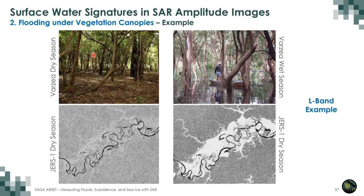Comparing two Amazon rainforest cases: during the dry season, you see moderate gray vegetation scattering around a dark river. During the flood season with standing water under the trees, strongly enhanced double bounce scattering makes all inundated vegetation areas very bright in the L-band dataset. These bright areas can easily be mapped in a GIS system or using automatic techniques to quantify inundated vegetation extent.